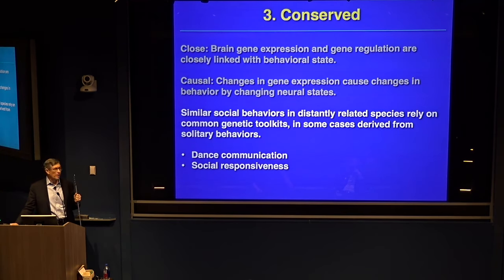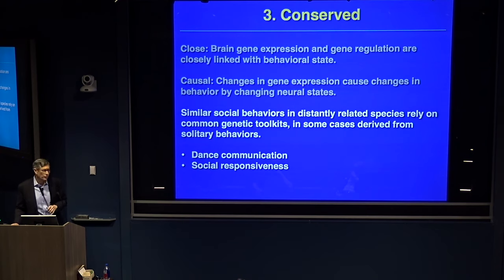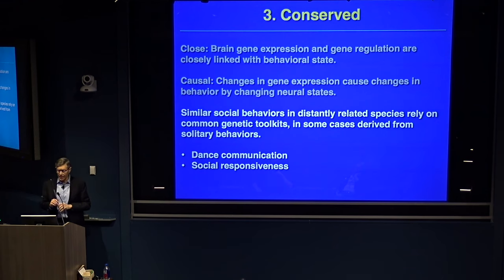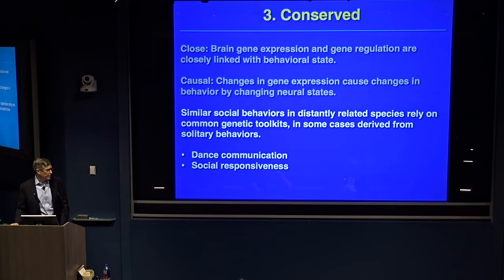The third and final C pillar we'll talk about is evolutionary conservation. This work was funded by the Simons Foundation, especially Jerry Fischbach — a shout out to Jerry. The idea, about 12 years ago, was really untested at the time. We're going to talk about similar social behaviors in distantly related species relying on common genetic toolkits, and how in some cases we can see derivation from solitary behaviors — a me-to-we kind of thing.